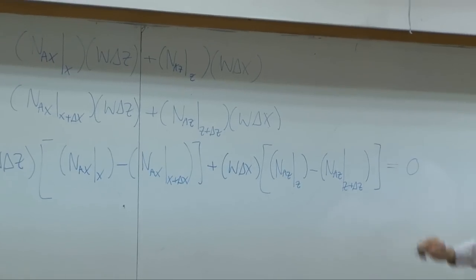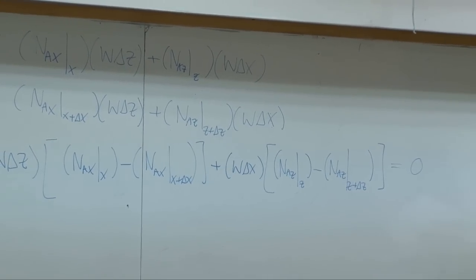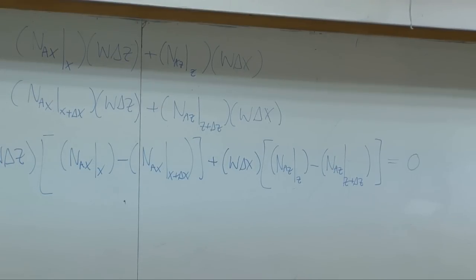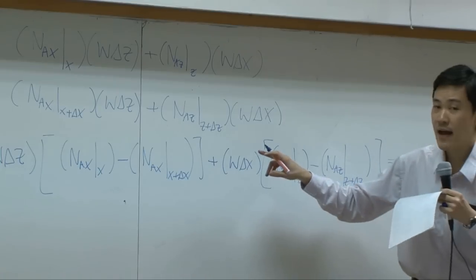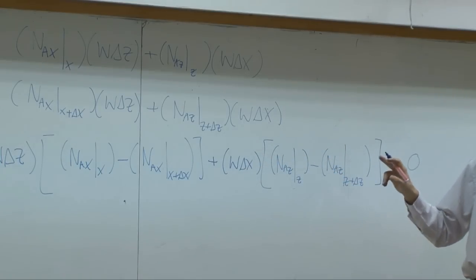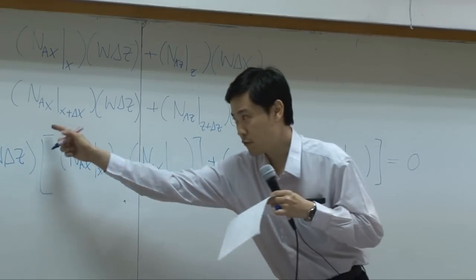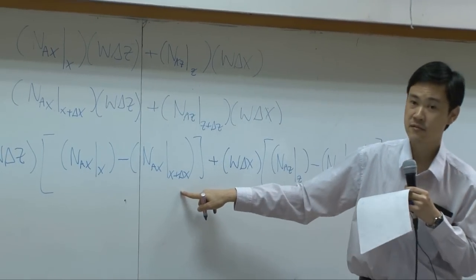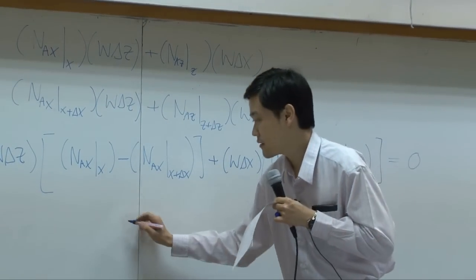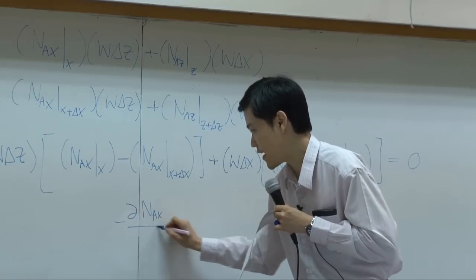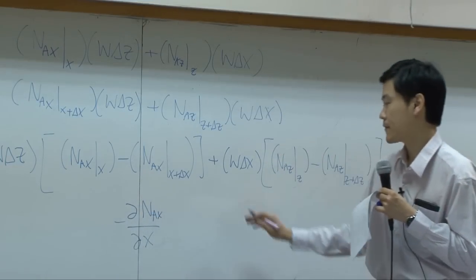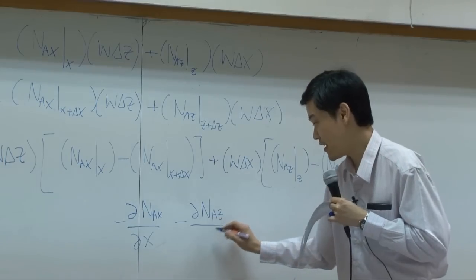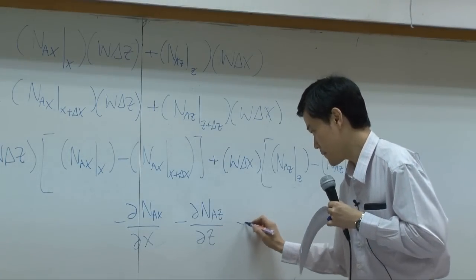In minus out equals zero at steady state. If you divide the whole equation by w·Δx·Δz, this term will drop out, leaving the denominator as Δx. Taking the limit, you have the differential dNAx/dx. This term as well — you end up with dNAx/dx + dNAz/dz equals zero.